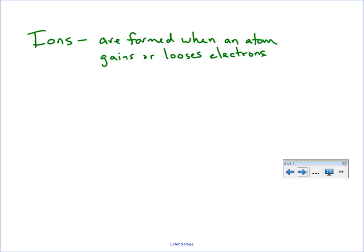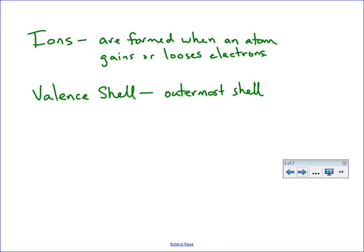Our valence shell — when you hear the word valence, that talks about the outer shell. So that word is going to come up. Our valence shell contains the valence electrons, which are the electrons in the outer shell.